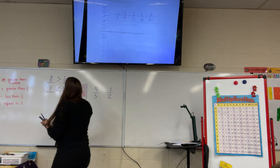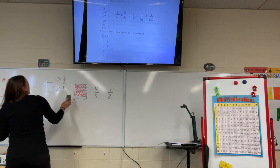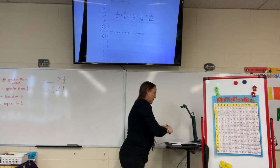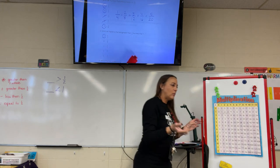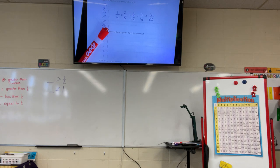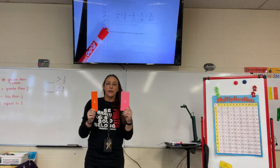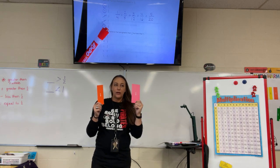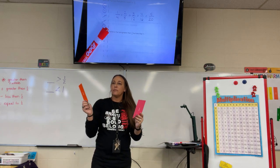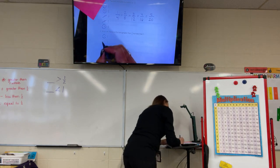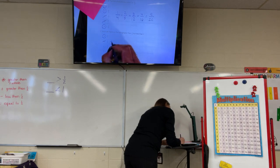On the next one, we're looking at 1/3. Since 1/3 and 1/2 both have a one on top, we compare the size of the parts. Is 1/3 bigger than 1/2? No. So it doesn't meet the first criteria. One third is out because one third is less than one half.